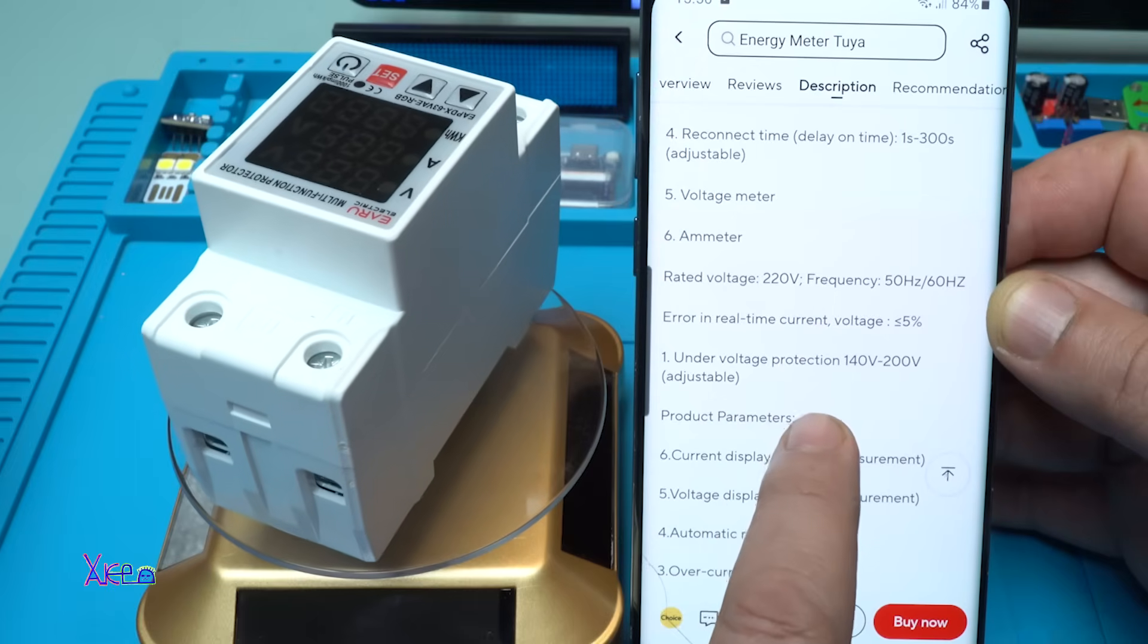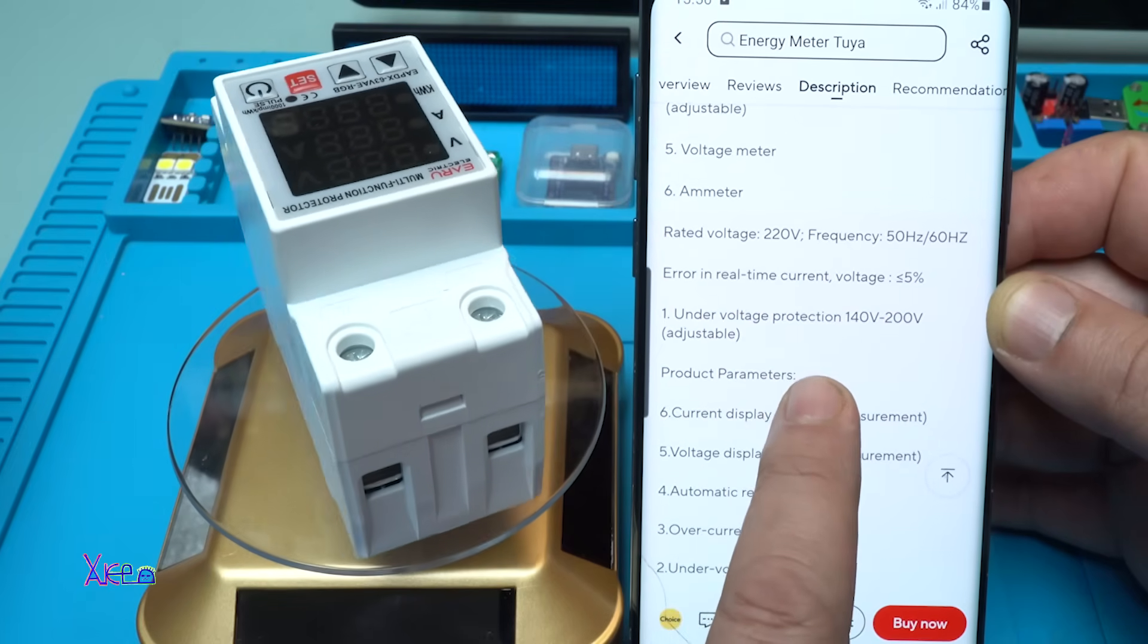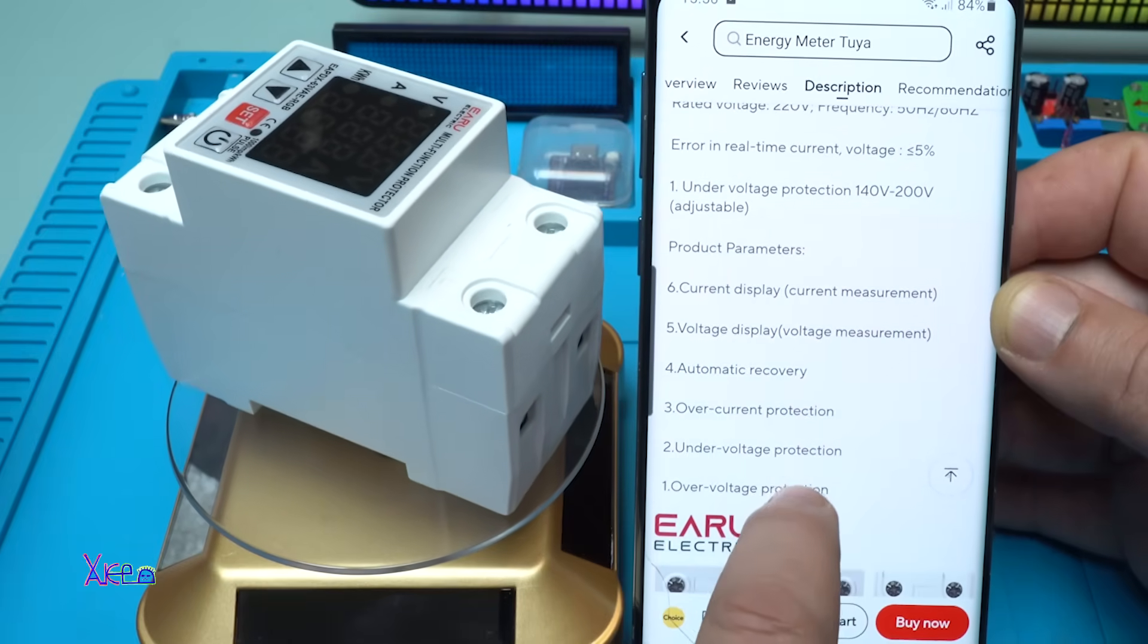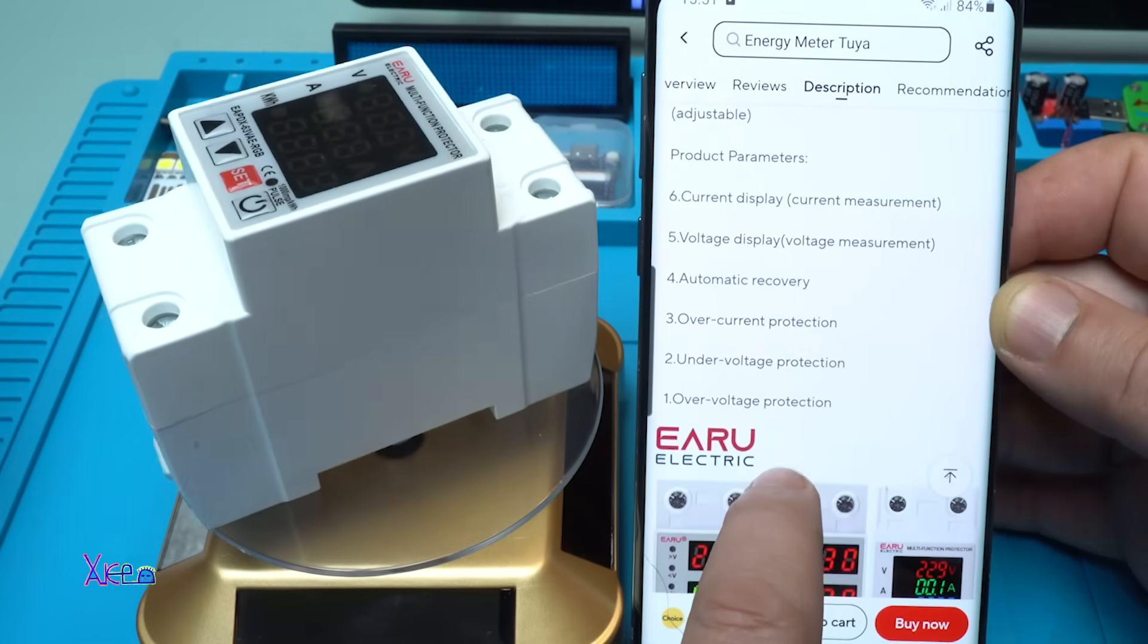Error in real time current voltage 5%. Also we have under voltage protection that can be set from 140 to 200 volts, current display, voltage display, automatic recovery, over current protection, under voltage protection and over voltage protection.